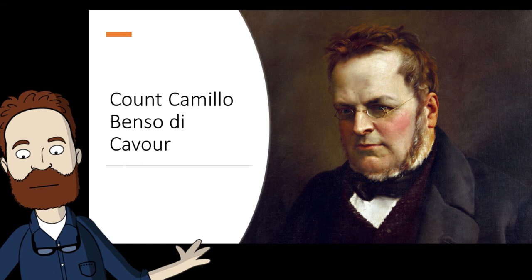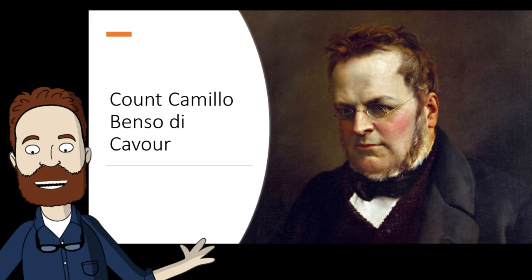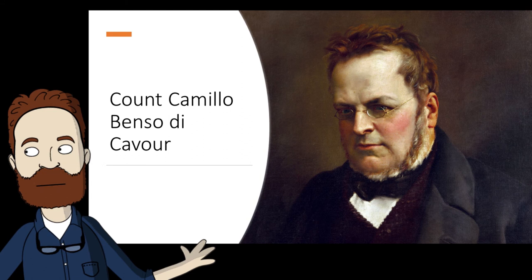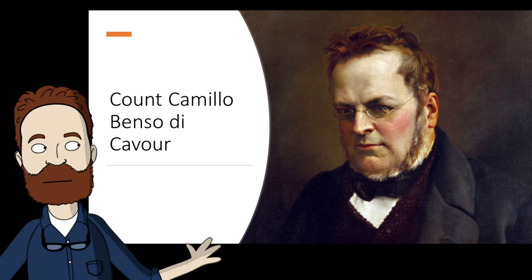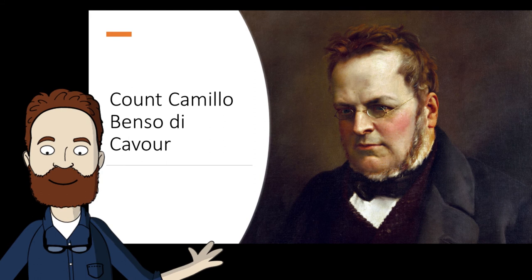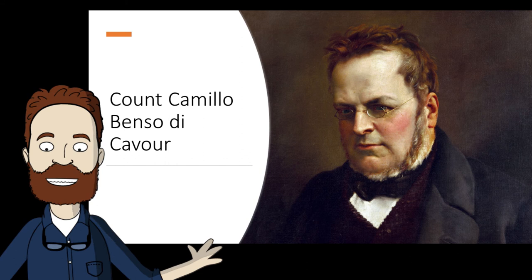He became a liberal after traveling throughout Switzerland, France, and Great Britain. He made his personal fortune in the sugar industry, investing in steamships, banks, and railroads. Once financially secure, Cavour entered politics in 1847, and also co-founded a newspaper urging Italian independence.